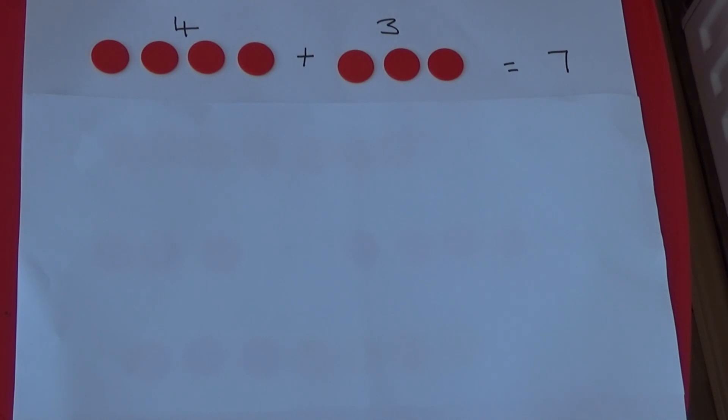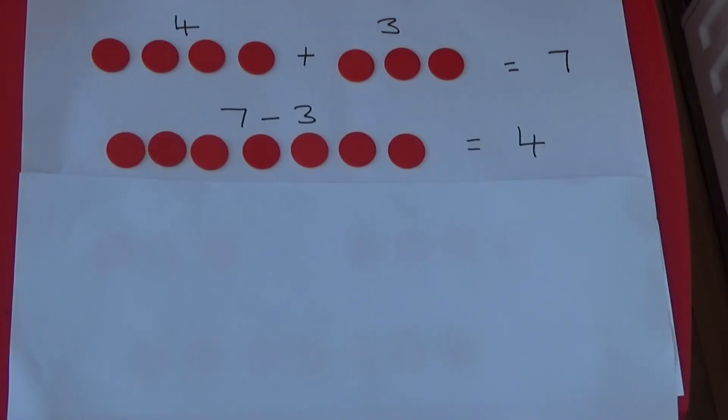We can also use two-sided counters to understand inverse calculations. Here, we can see four add three equals seven. We can work out the inverse, which is seven take away three. If I turn over three counters, we are left with four.